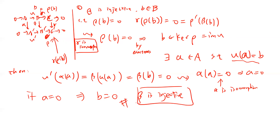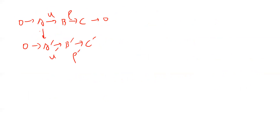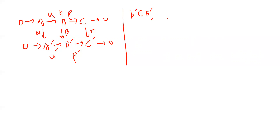The proof requires doing it step by step carefully. Next, let's prove that β is surjective. The goal is: for any b' in B', we need to find a b in B such that β(b) = b'.